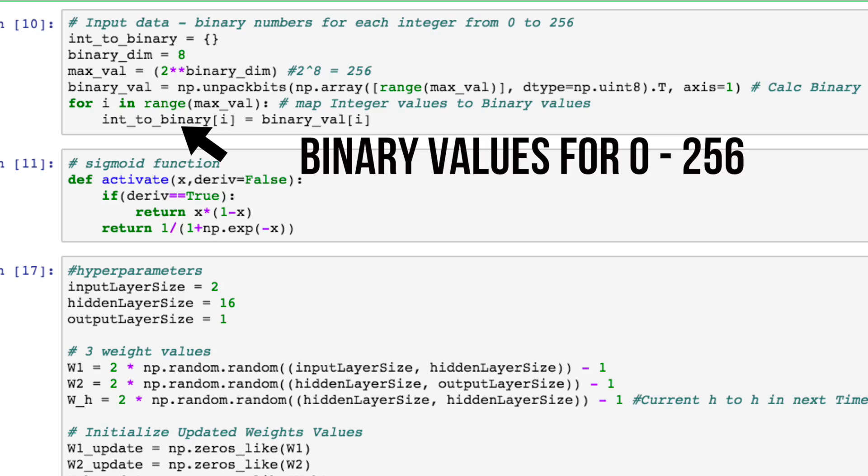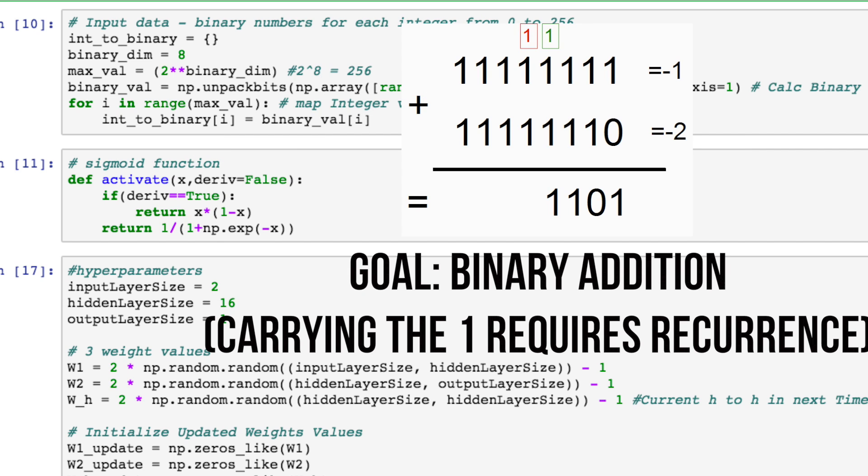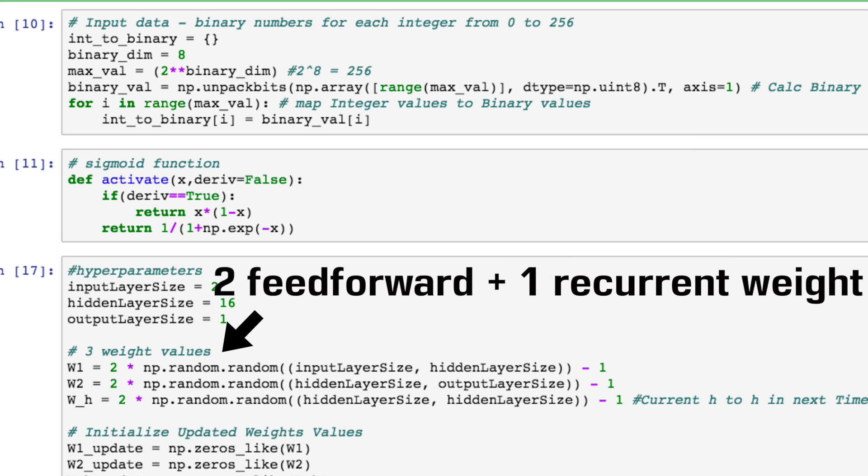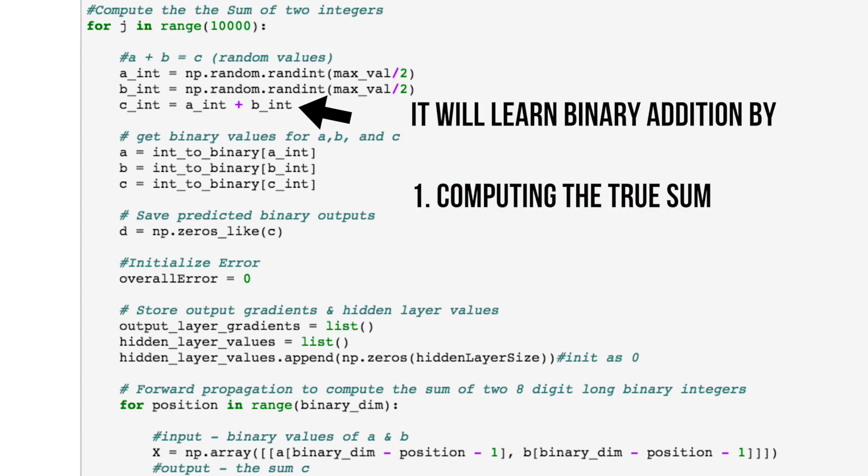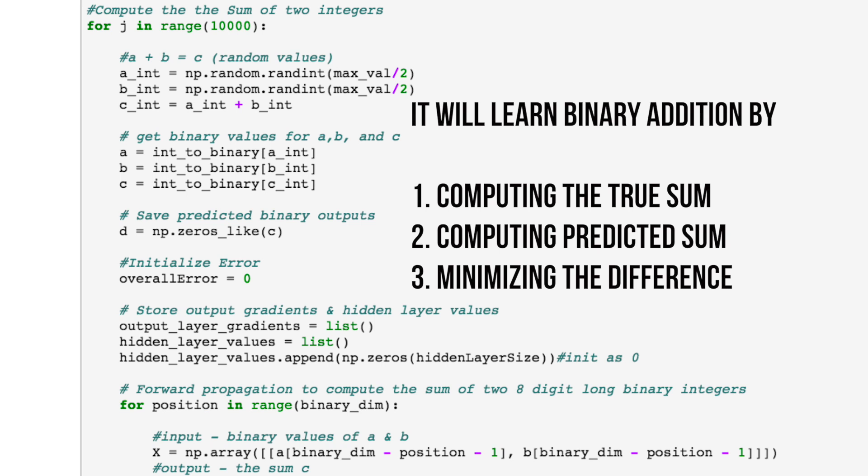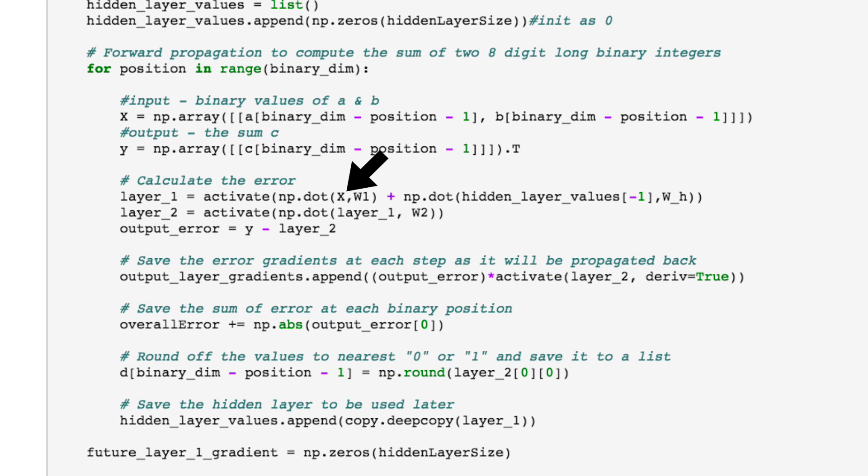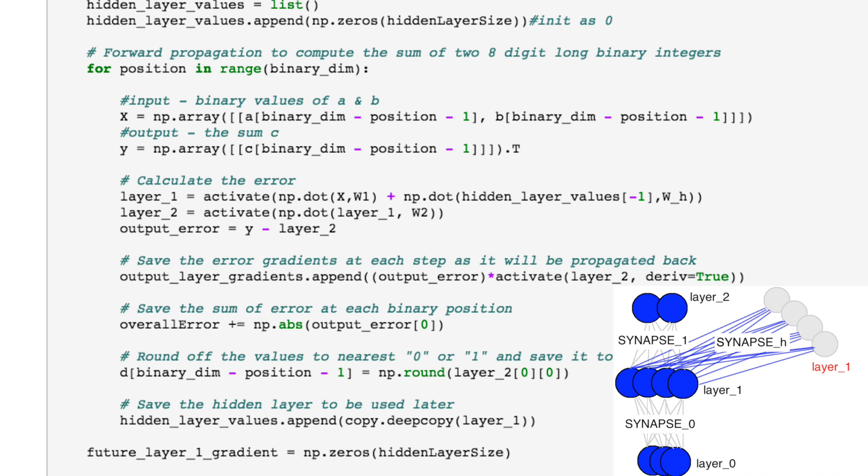So this time we've got sequential input data. We still initialize our weights randomly like before. We still multiply our input by our weight matrix and apply an activation function to the result for every layer. However, the difference in forward propagation this time, though, is that for each element in the sequence, we don't just use it alone as the input, we use the hidden state from the previous time step as well. So a hidden state at a given time step is a function of the input at that same time step modified by a weight matrix added to the hidden state of the previous time step, multiplied by its own hidden state to hidden state matrix.